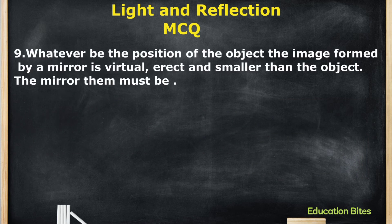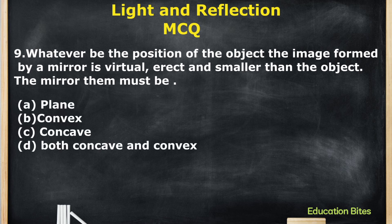The next question: Whatever be the position of the object, the image formed by the mirror is virtual, erect, and smaller than the object. Which mirror is this? Options are A. Plane, B. Convex, C. Concave, or D. Both concave and convex. The correct option is B: Convex mirror.